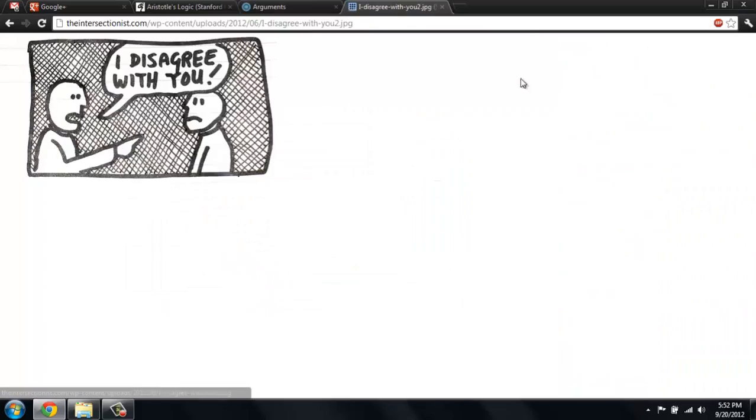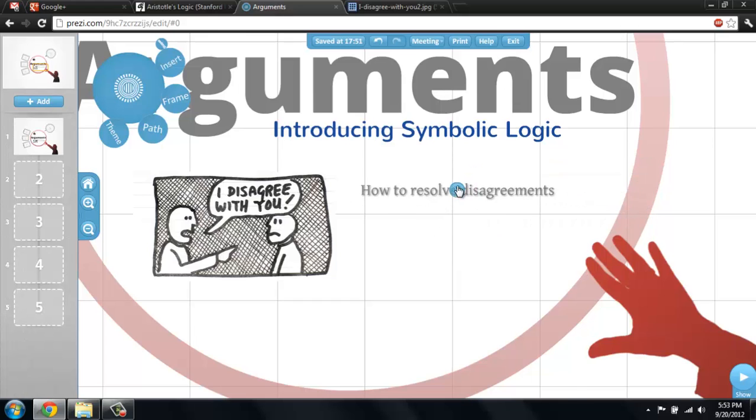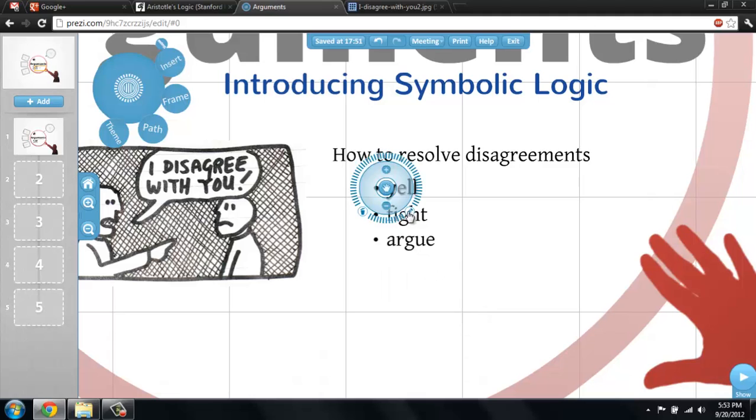Whenever you make a claim, it's possible that someone will disagree with you. There are a couple of ways to resolve a disagreement. You can yell, you can fight, or you can get into an argument.